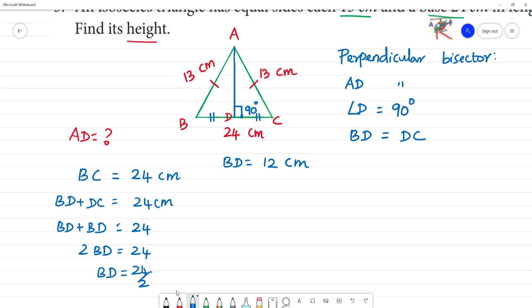Now we know here is 12 cm, total 24. Now we need to find height. What we can use is Pythagoras theorem.